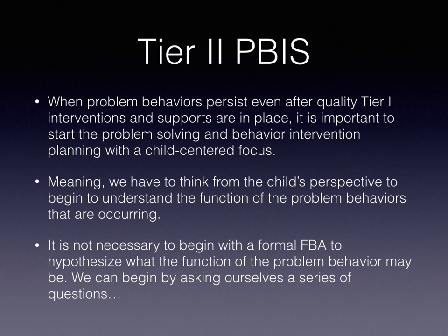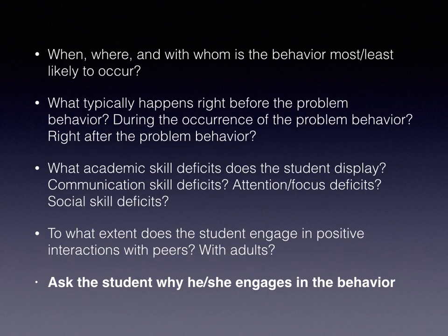Before choosing additional strategies, do some sort of informal functional behavior assessment process at the Tier 2 level — not a full-blown functional behavior assessment, but a series of questions. Ask when, where, and with whom is the behavior most and least likely to occur, to figure out why the problem is happening and what promotes positive behavior that could be brought into problem environments. Also find out what typically happens right before, during, and right after the problem behavior to analyze antecedents and consequences.